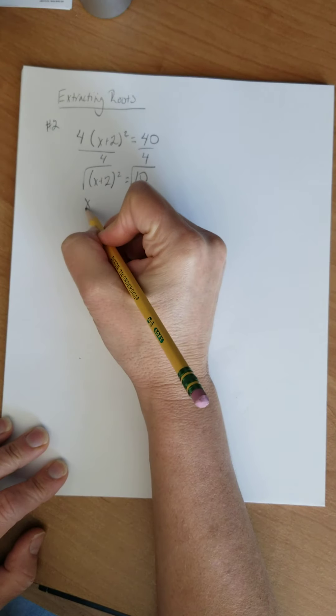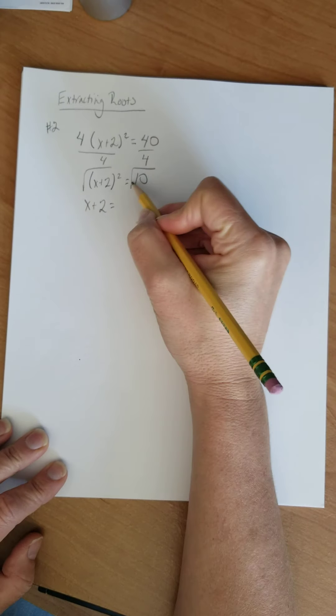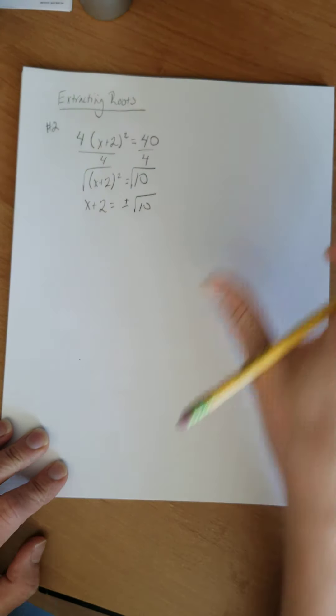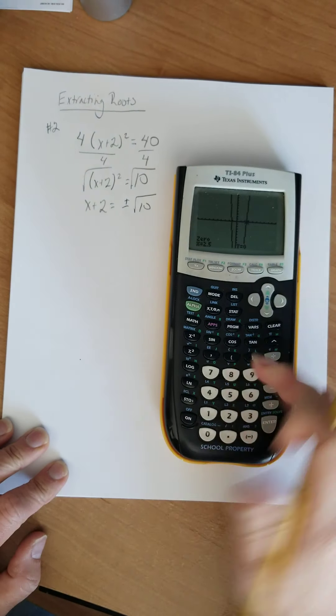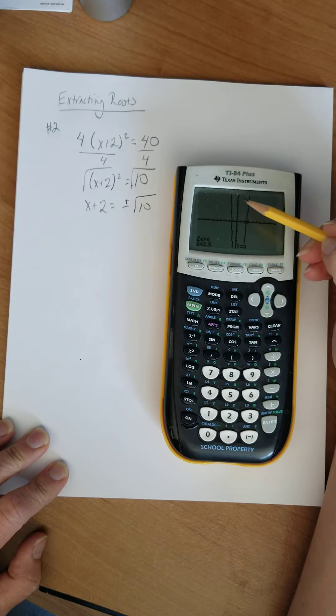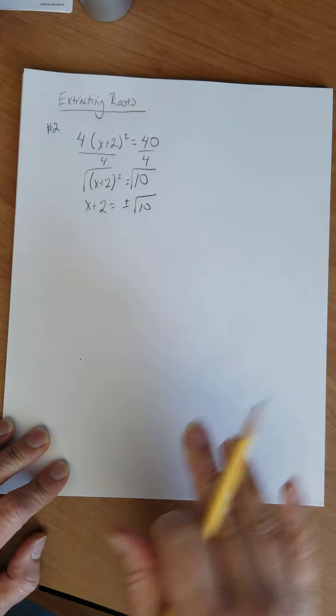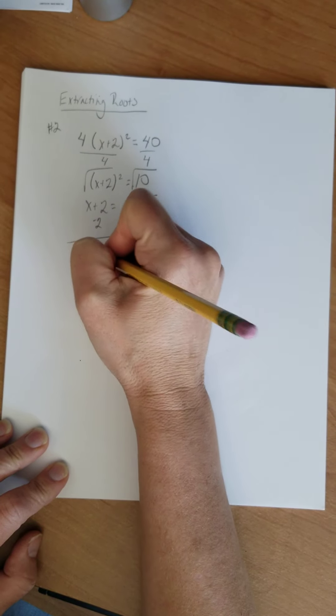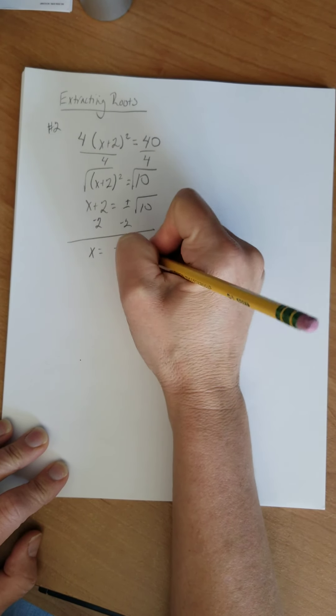I'm going to have x plus 2 squared equals 40 divided by 4 is 10. Now we can take the square root. So I'm going to have x plus 2 equals the square root of 10. There's two of them. It's plus or minus the square root of 10 which makes sense because when we looked at these, don't most parabolas, they're either going to hit this twice, once, or none. Well, there's my twice. And then I'm going to subtract 2.